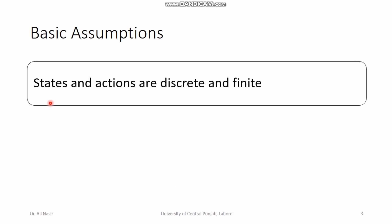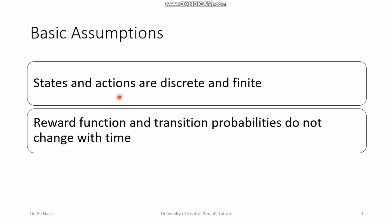Basic assumptions: states and actions are discrete and finite. In control system theory we typically use continuous time states and continuous control signals, though discrete time or digital control systems also exist. In Markov processes, states and actions can be discrete or continuous, but I will assume they are discrete and finite. The reward function and transition probabilities do not change with time — the value of a state or cost of an action is predetermined.